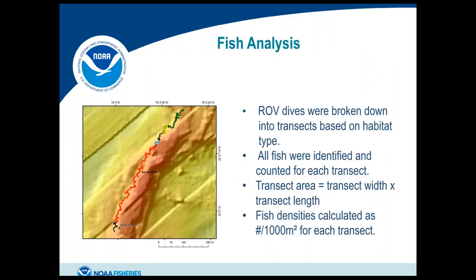For the fish analysis, ROV dives were broken down into transects by habitat type. We identified and counted all fish per transect, then calculated transect area by multiplying transect width — estimated using lasers a known distance apart on the ROV — by transect length calculated from ROV tracking. Fish densities were expressed as number per 1,000 square meters for each transect.